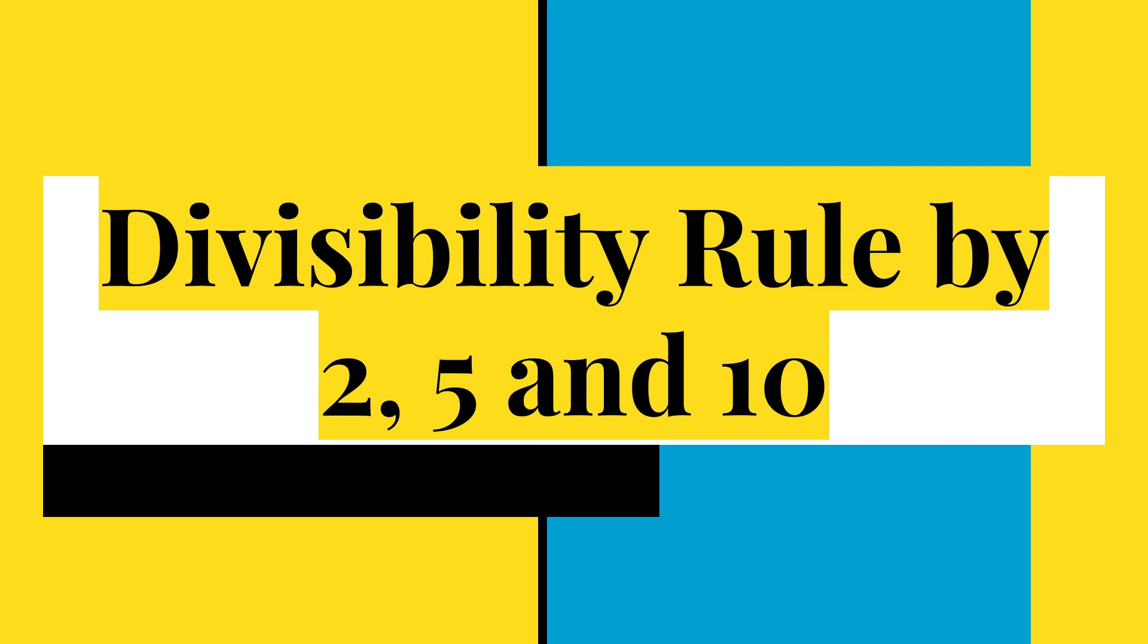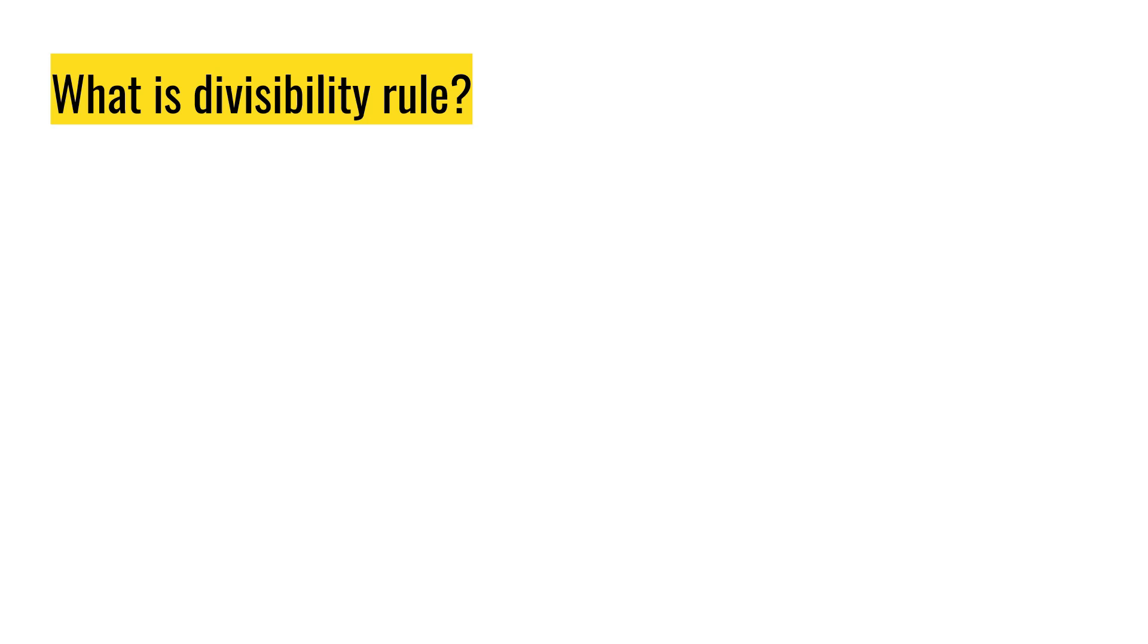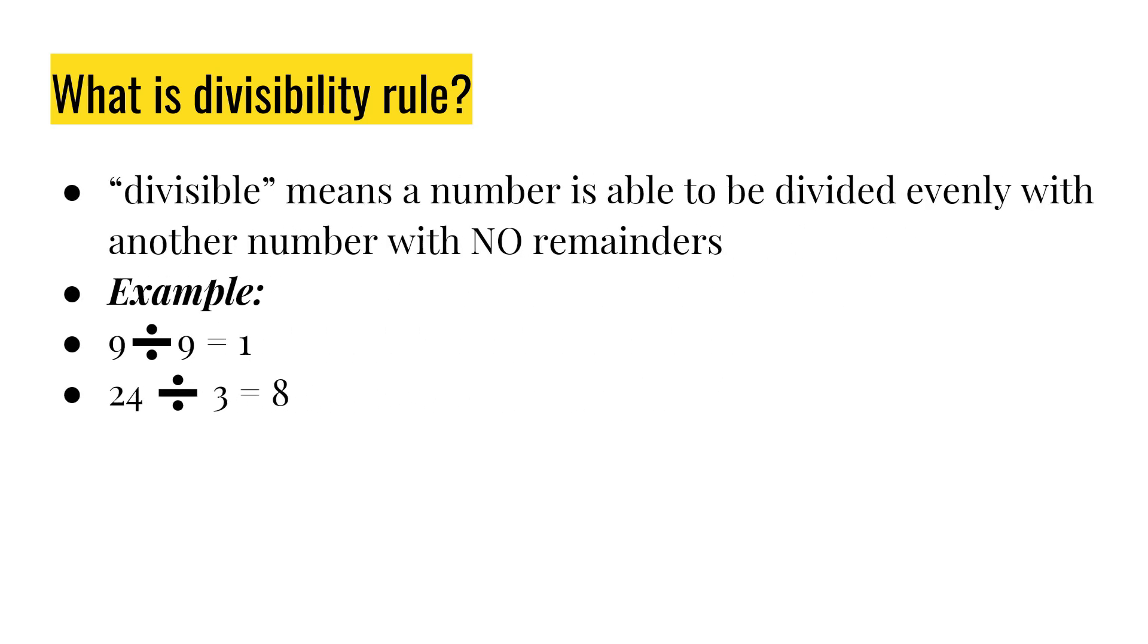Let's talk about the divisibility rule by 2, 5, and 10. So what is the divisibility rule? Divisible means a number is able to be divided evenly with another number with no remainders. Ang number is divisible kapag na-divide nating number, ang magiging sagot ay walang remainder.